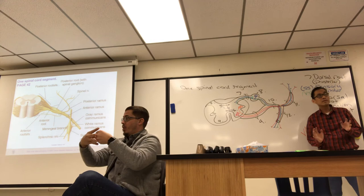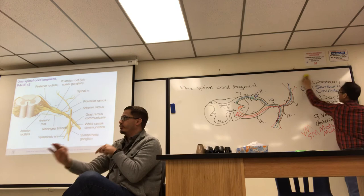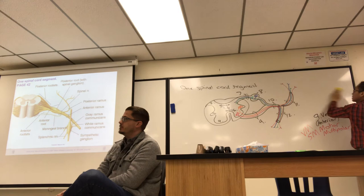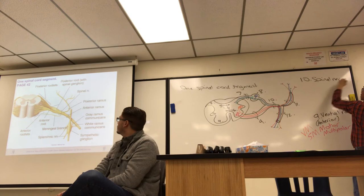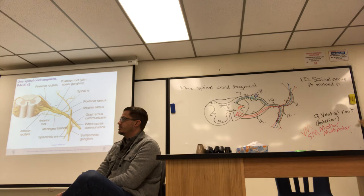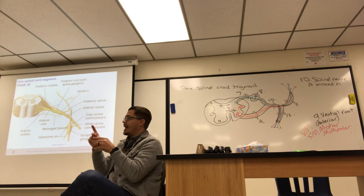When the dorsal and ventral roots merge, the resulting structure is called the spinal nerve — number ten. The spinal nerve is a mixed nerve because it contains all four functional types: somatic motor, visceral motor, visceral sensory, and somatic sensory.